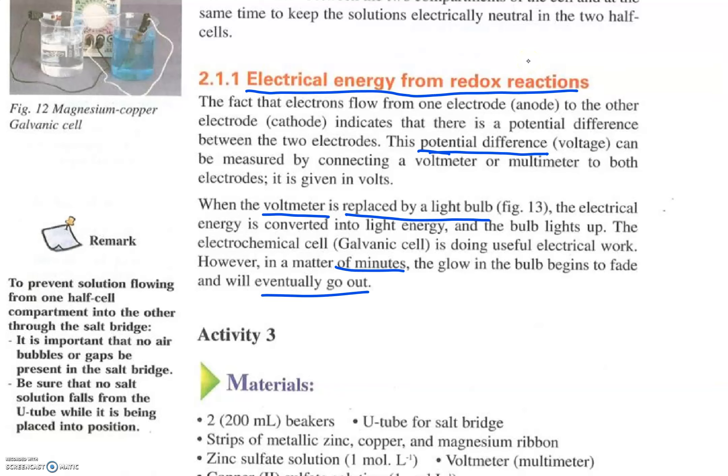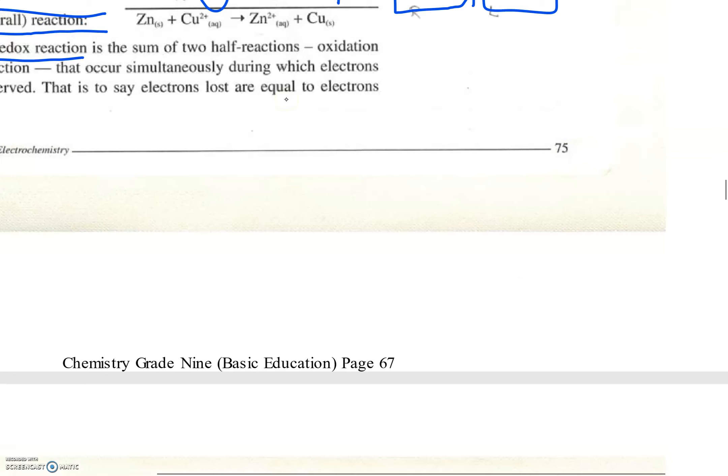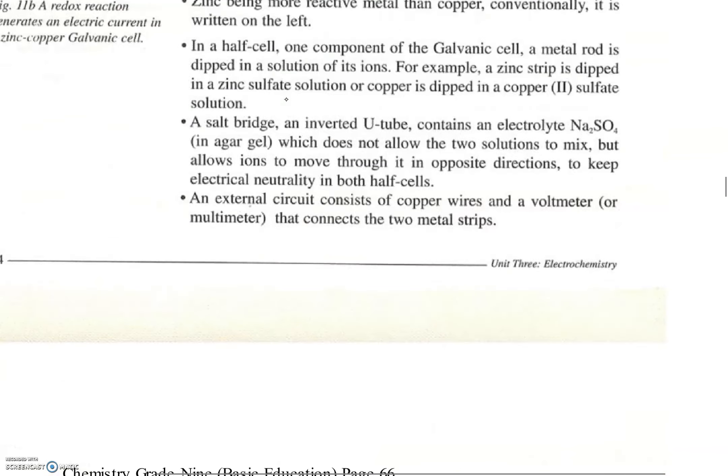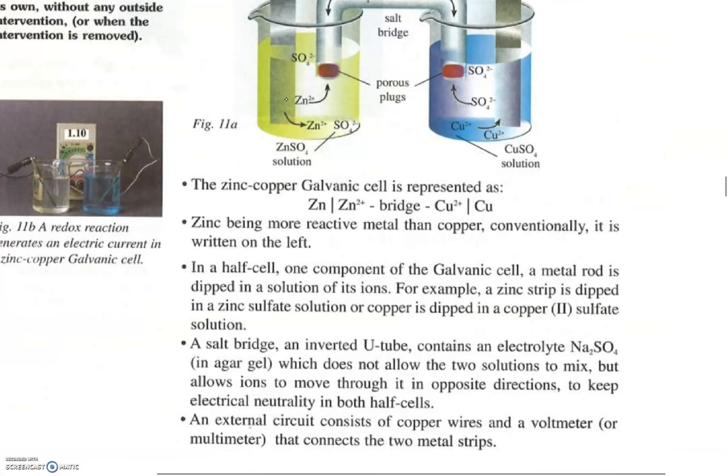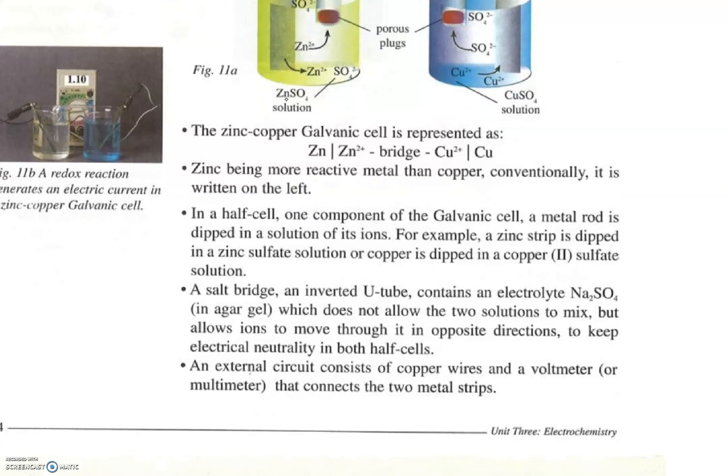However, it will eventually go out in a matter of minutes. So let's go back and see how we present a cell, a galvanic cell, because this is very important. We start with the reactive metal because this will be the anode and we end with the least reactive metal which is the cathode.